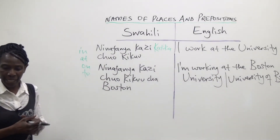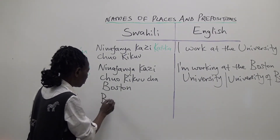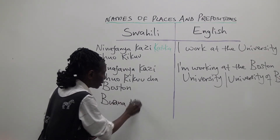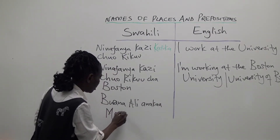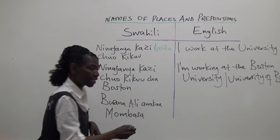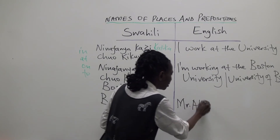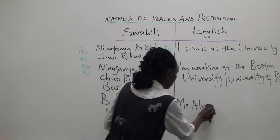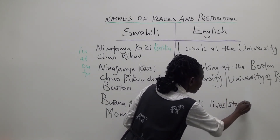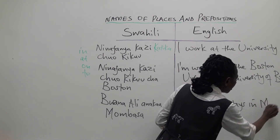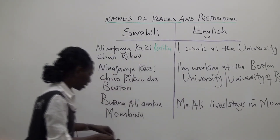A third sentence to help us understand this concept further would be: Bwana Ali Anakaa Mombasa. The translation would be: Mr. Ali lives or stays in Mombasa.